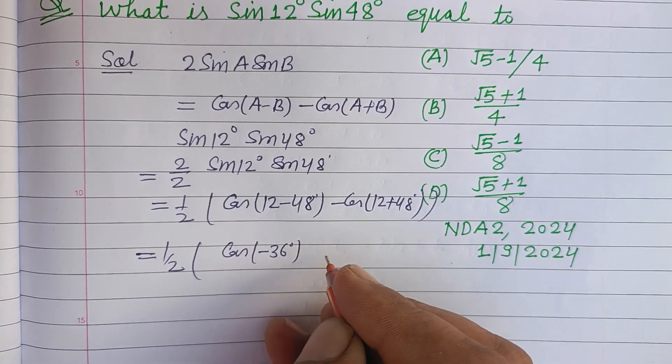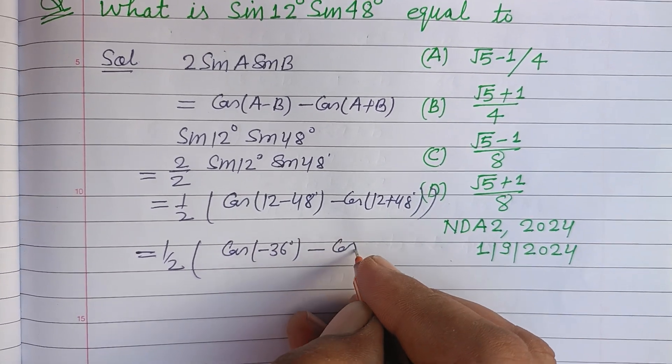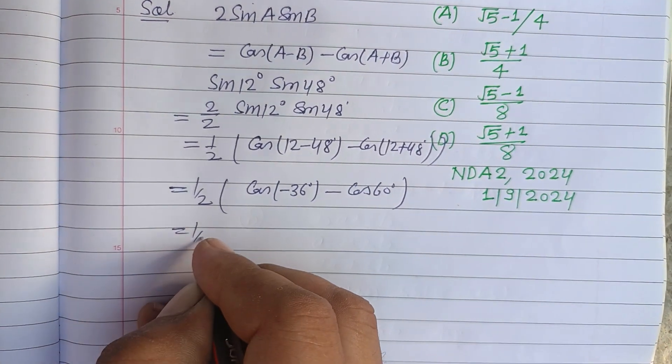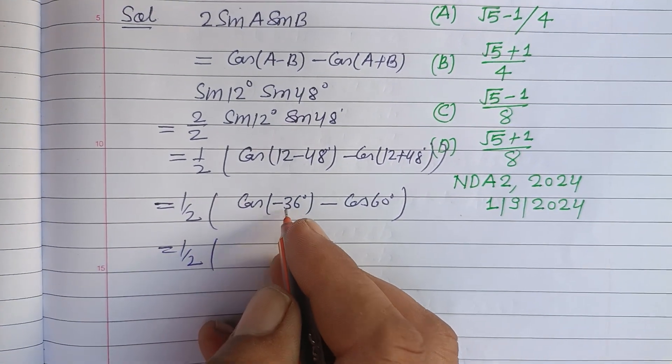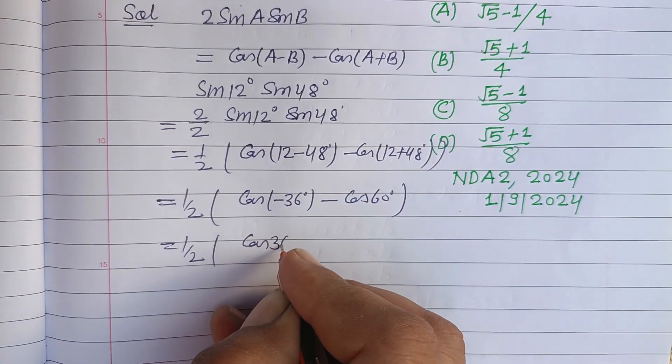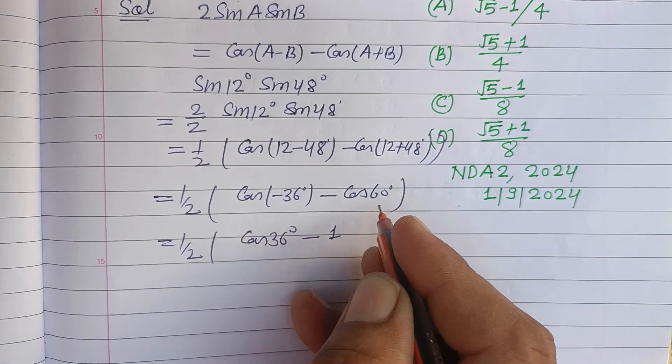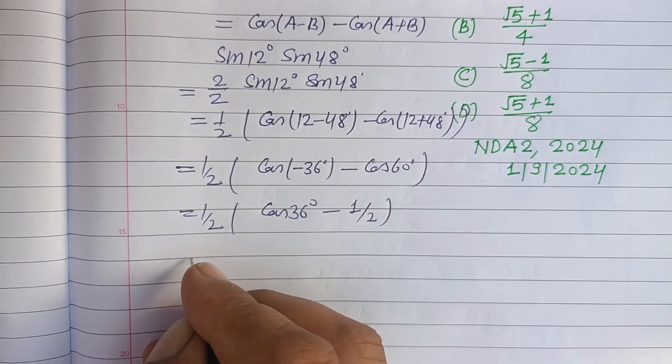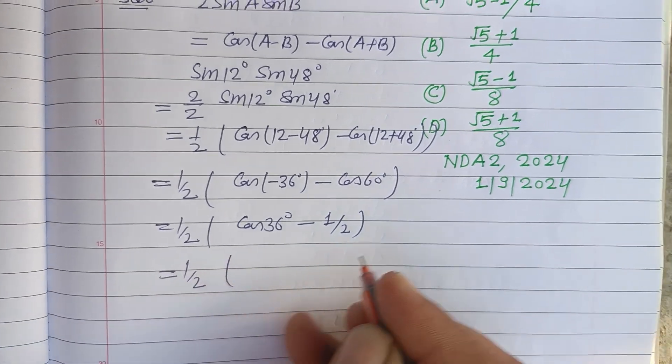minus cos 60°. Now, 1/2, cos minus theta equals cos theta, so this is cos 36°. Cos 60° is 1/2. Now we all learn the value of cos 36°,